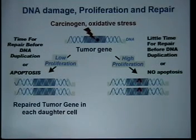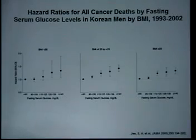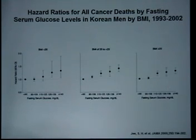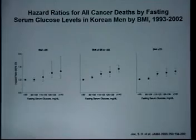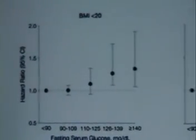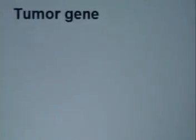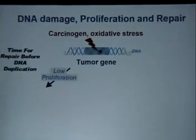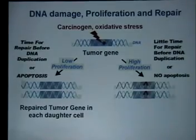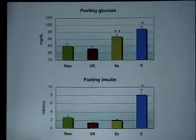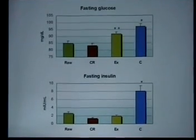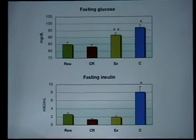An interesting study published in JAMA in 2005 showed that independently of BMI — whether less than 20, 20 to 23, or more than 23 — the higher the fasting serum glucose, and therefore the higher the insulin, the higher the risk of dying of all types of cancer. Here you can see that fasting glucose in CR participants is significantly lower than in most people eating a typical American diet.